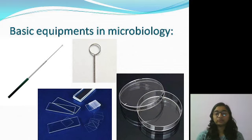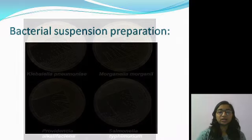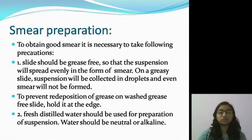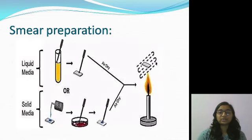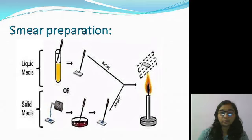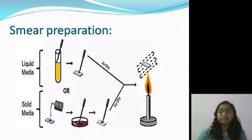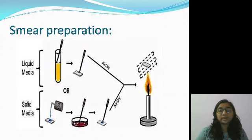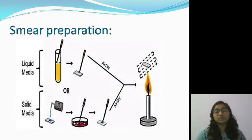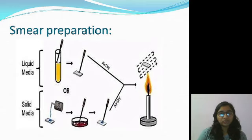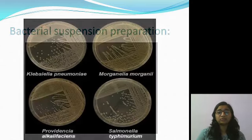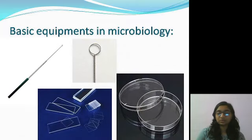After covering staining solutions, the next point in our unit is smear preparation — how to make a smear. This is also a background concept. The actual points from the syllabus that follow are the methods of staining: simple staining, negative staining, and differential staining. But to understand staining methods, we should know about some basic concepts in microbiology and some basic equipment used in the microbiology lab. Once we have this foundational knowledge, we can properly understand staining methods.